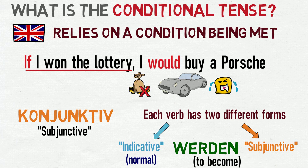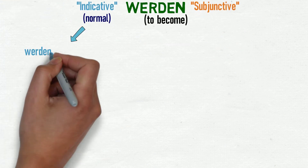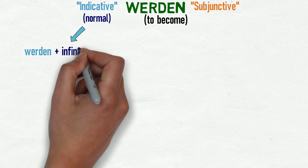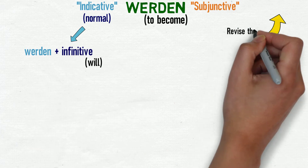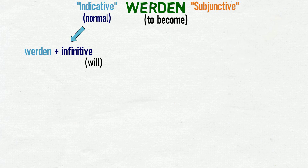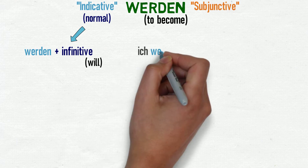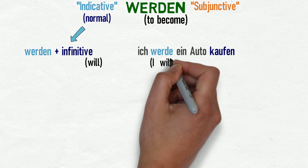In the future tense video I made, you learned that we can use werden with an infinitive to mean 'will'. If you haven't seen this video yet, please click the banner in the video now. Using the indicative — the normal form of the verb — Ich werde ein Auto kaufen: I will buy a car.